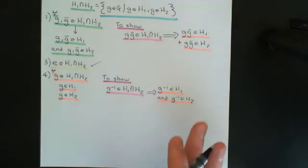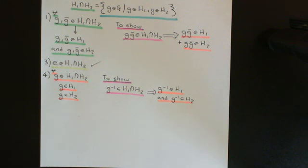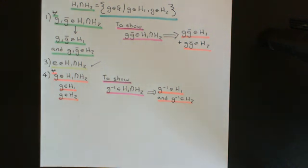So really, this is a very easy exercise to show that two subgroups H1 and H2 intersected together — the intersection of those two — has to also be a subgroup. As I say, this is a fact that is very, very important. It is used in a lot of the more advanced proofs in group theory, and we will be making use of it in future videos in this playlist.